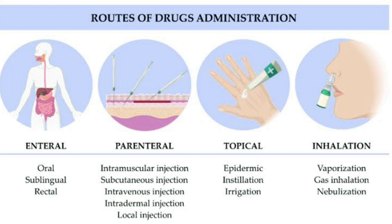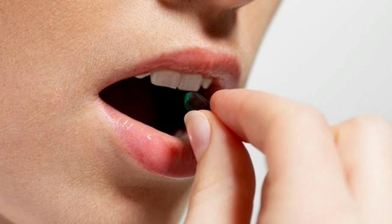But first we must keep in mind which route is convenient for the patient. Now we move toward the first route, that is the oral route, which is the commonly used route. By this route the drug is given through the mouth and the drug is orally absorbed through the GIT, and maximum drug absorption takes place in the small intestine. Different oral preparations are available such as tablets, capsules, syrups, elixirs, and suspensions.